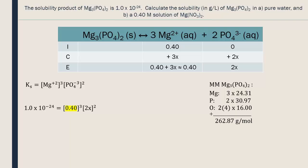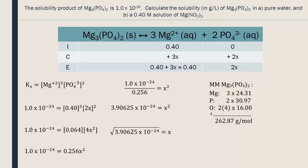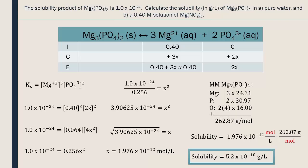We solve for x. Then, we just need to calculate the solubility in grams per liter. To do this, we multiply by the molar mass, which we already calculated. The solubility at two significant digits is 5.2 × 10⁻¹⁰ grams per liter.